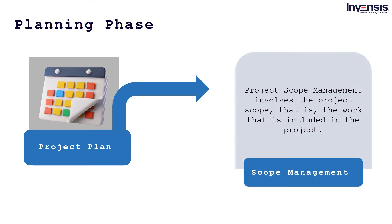Scope management involves the project scope — that is, the work that is included in the project. The process is about making sure that everyone concerned with the project is clear about what the project is aimed at and what it includes. Scope changes alter mostly the project itself, so it is essential that project boundaries are well defined from the beginning and are carefully monitored. Changes can occur at any point in time, but even the simplest changes can have a lasting result on the outcome of the project.